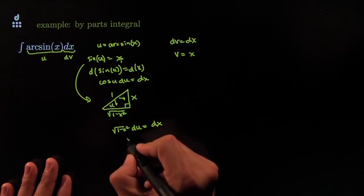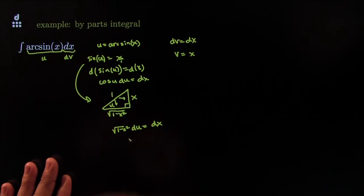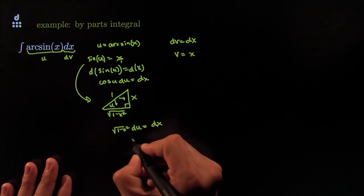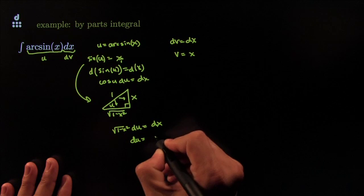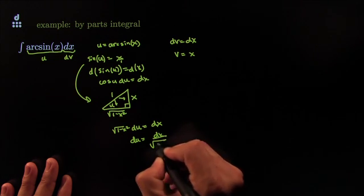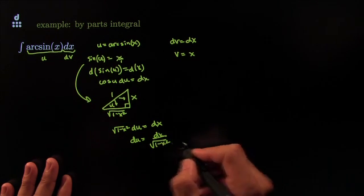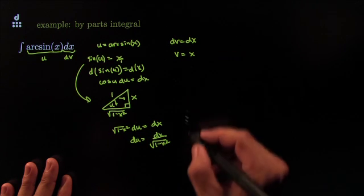Or, say it differently, du is equal to dx all over the square root of 1 minus x squared. Alright, that tells me what the du is and that tells me what the dv is.